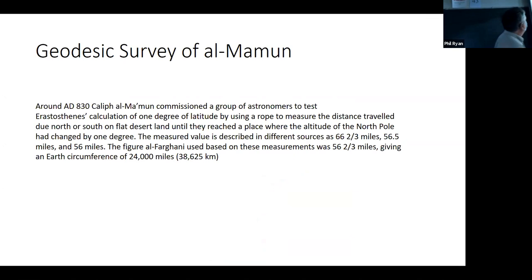So we've talked about the caliph Al-Mamun before. He was one of the early Abbasid caliphs. He was kind of there when the Islamic empire really was at some kind of height. He was really a big patron of arts and science and that. And so one of the things he wanted to do was test Eratosthenes' calculation.